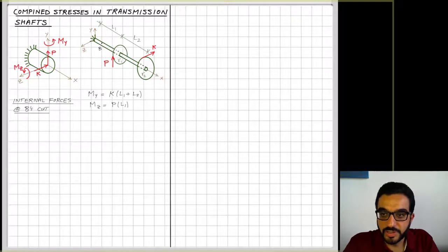And if I look at now moment around the z, I see K doesn't contribute to the z because it's parallel to the z axis, but P is perpendicular to it and it's not going through the z axis. So now Mz is equal to P times L1.